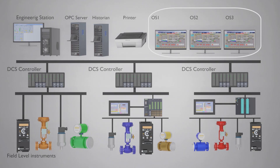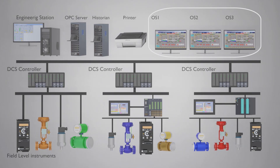Then we have operator screens. For each area in a DCS, you have different operator screens. For instance, area A will have its own specified operator screens. The role of the operator screens is to display graphical values of different process parameters from the field. So for each area, you have its own specific operator screen.